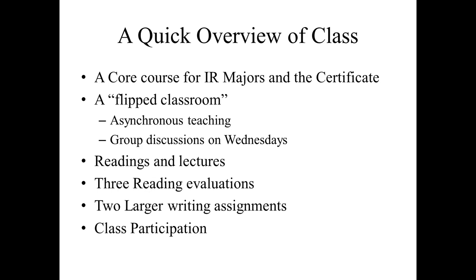To help you keep up with the readings and make certain you're understanding the material, I also assign what are called reading evaluations. Those of you who have had me before know these are smaller papers, usually about five to six, seven pages at the absolute most, focusing on a particular section of class. For this class, we have three reading evaluations that are required and there are five sections. There will be a reading evaluation attached to each section, and you are required to do three of any five. The reading evaluations are about 30% of your grade, with each paper worth 10 points.